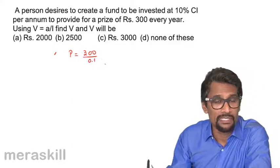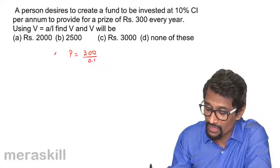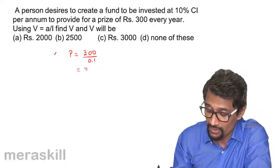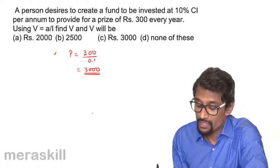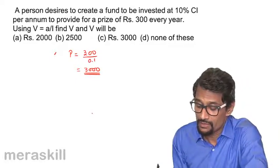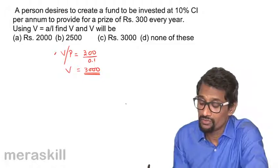is—you can use the present value formula, but since n is approaching infinity, it will just be 300 by 0.1, that is 3000 rupees. So V is equal to A upon I, which is what we're calling P. So V is going to be 3000,